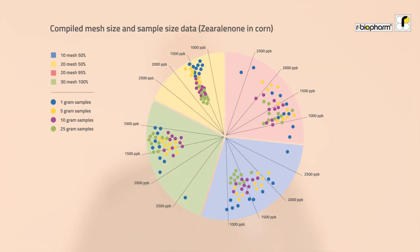The next graphic shows the same experimental setup, but now for zearalenone in corn and DON in barley. Instead of bars, the results are shown in a pie diagram, but the message is the same: less finely ground samples lead to larger variations, as do smaller sample sizes. The accuracy of your results increases with more finely ground, larger samples prior to extraction.